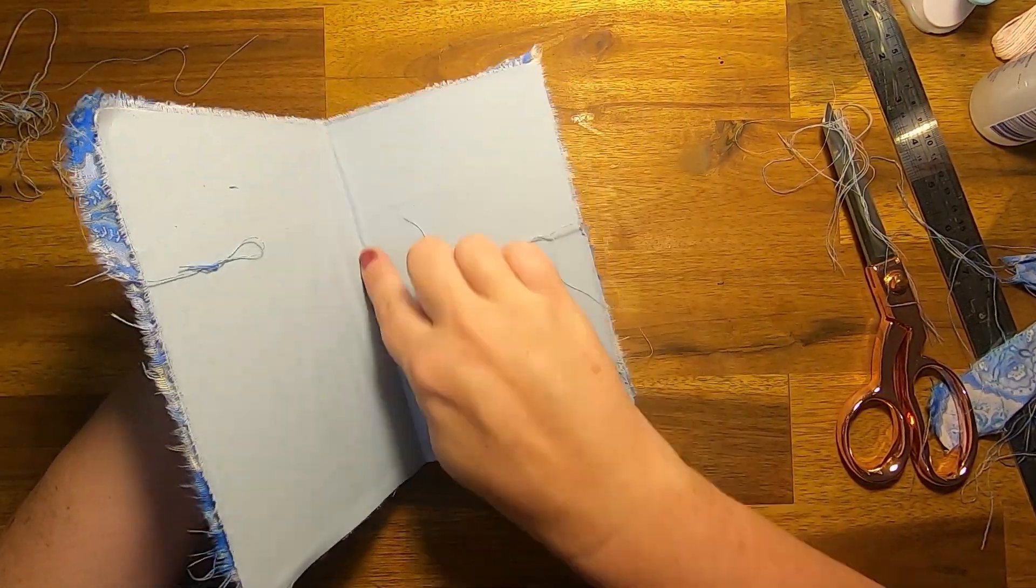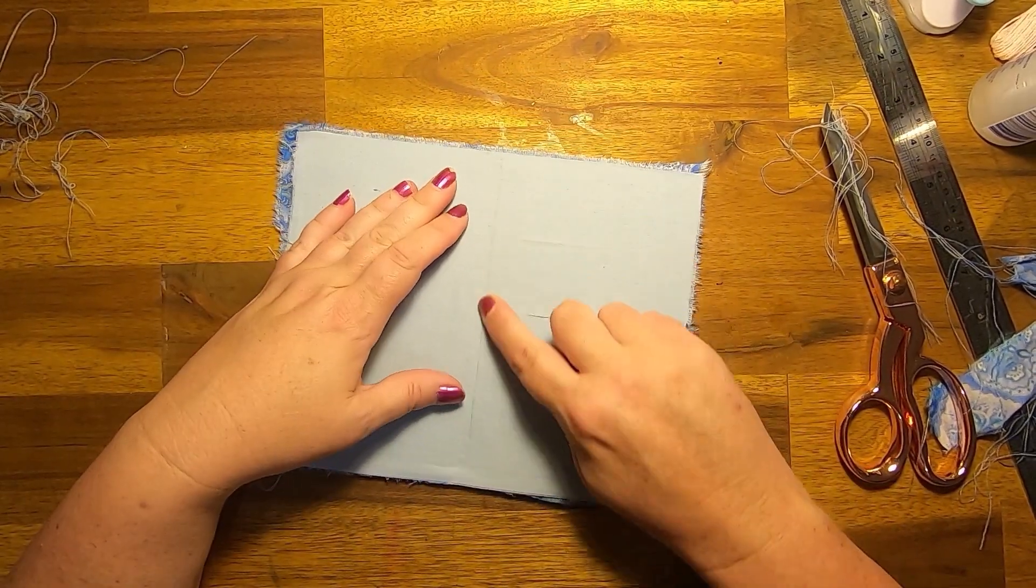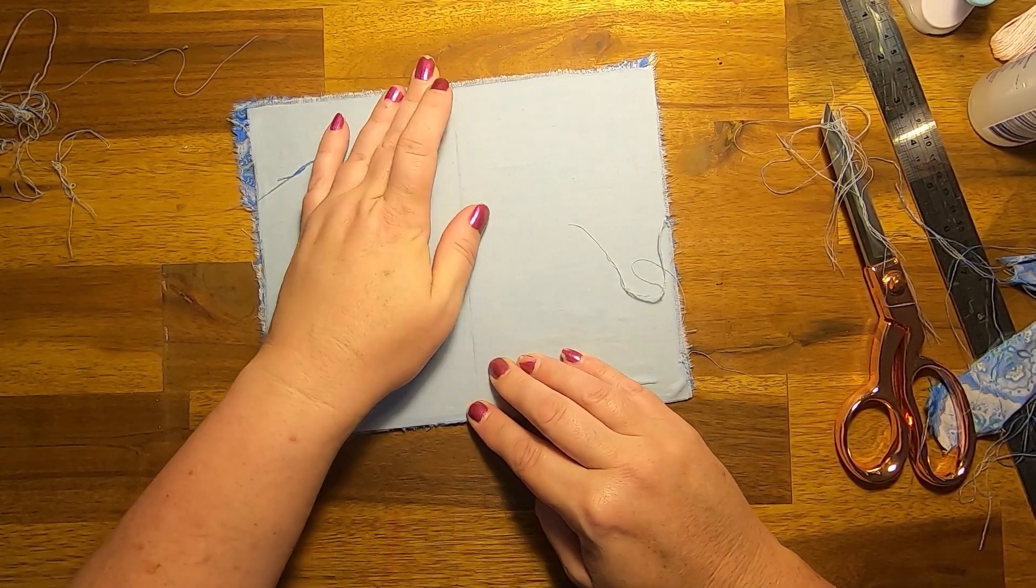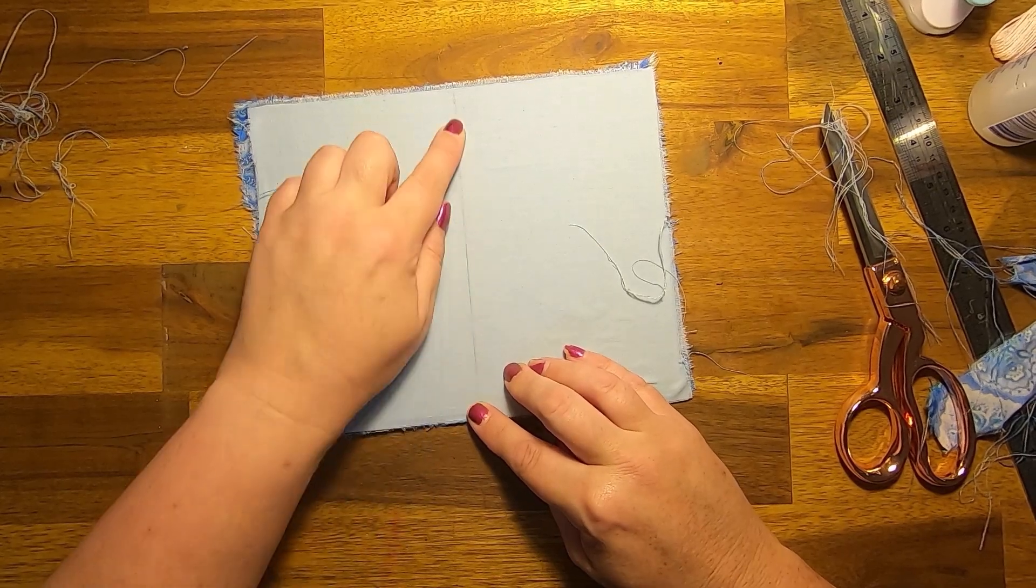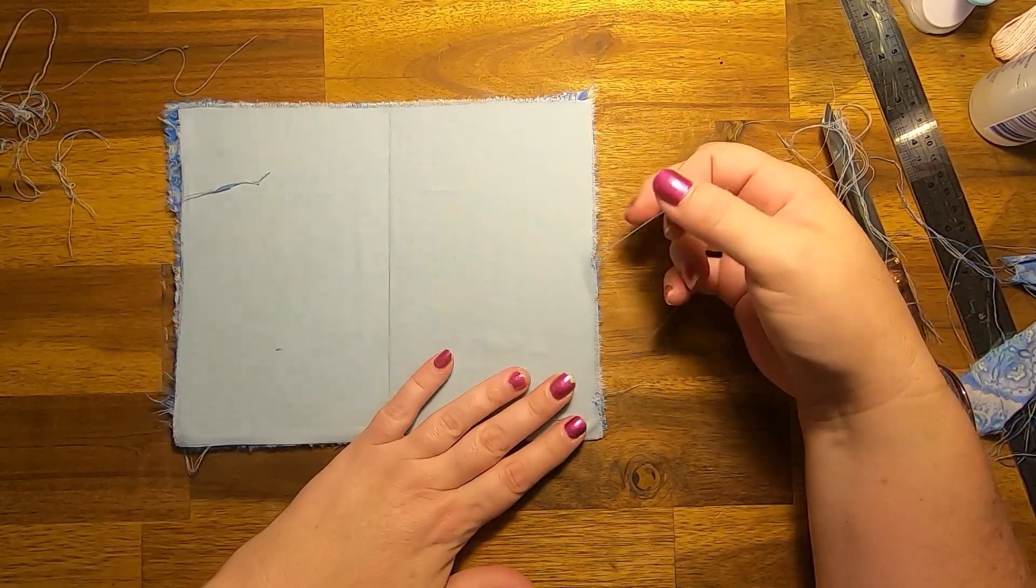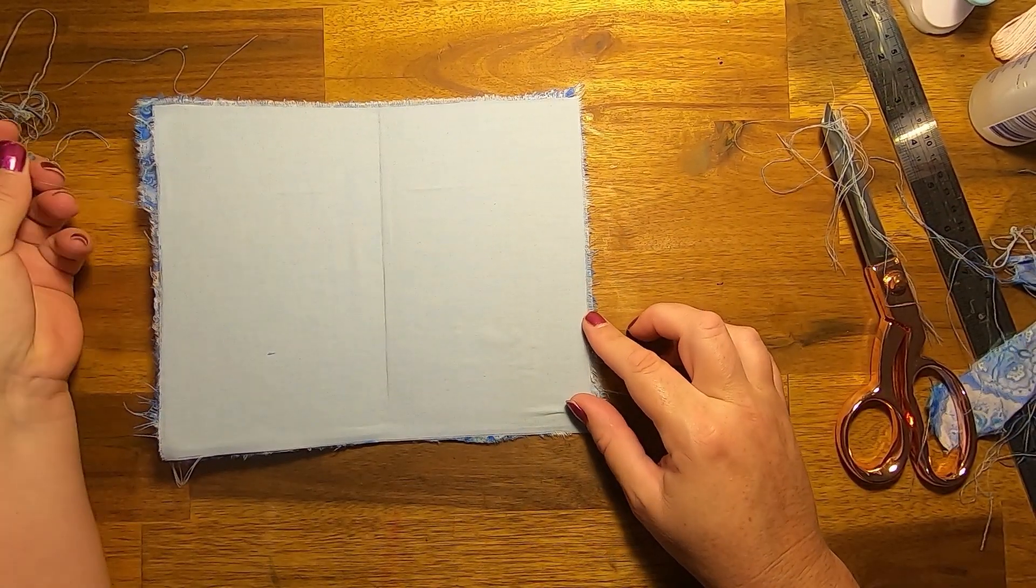And then once you've done that, you'll be able to fray your edges and decorate. Then you can put a little signature in here. Because I did this a little bit differently and I reinforced the spine, I didn't need to add a reinforcing tape, which I did to the last ones. This one was a little bit different. I think this is a better design. And that's what happens, isn't it? We learn as we go.